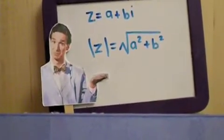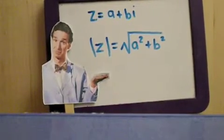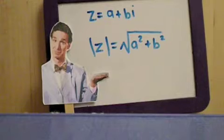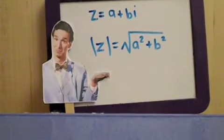Up next is finding the absolute value of a complex number. If z equals a plus bi, then the absolute value of z equals the square root of a squared plus b squared. Remember this formula, and you will be fine.